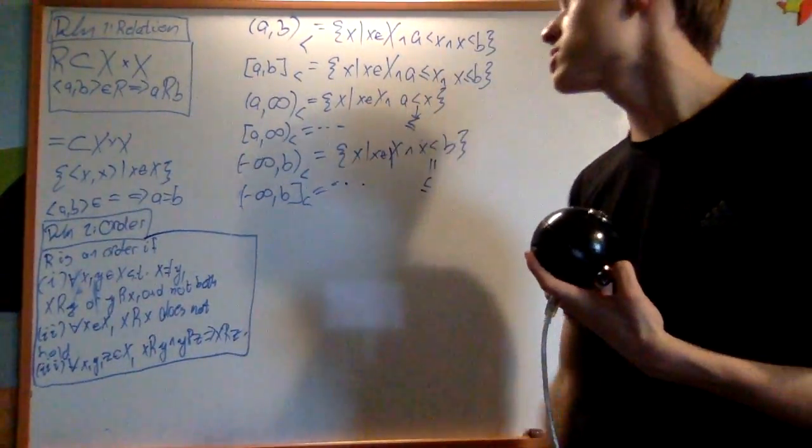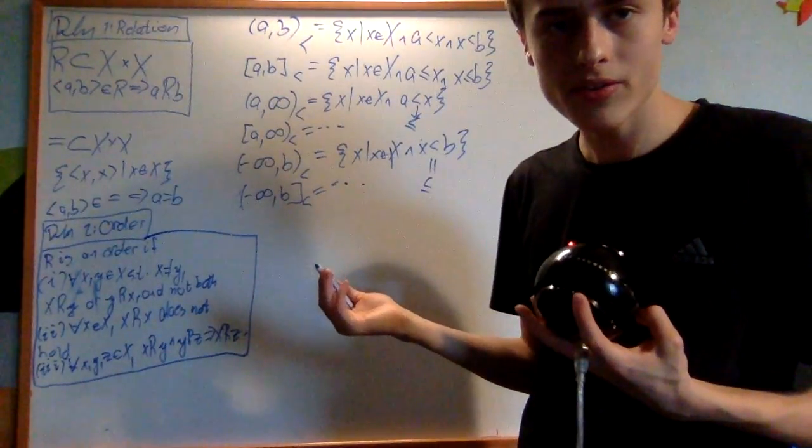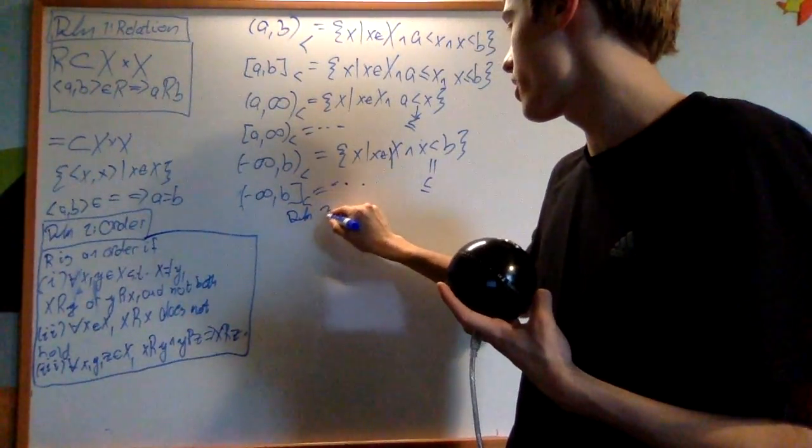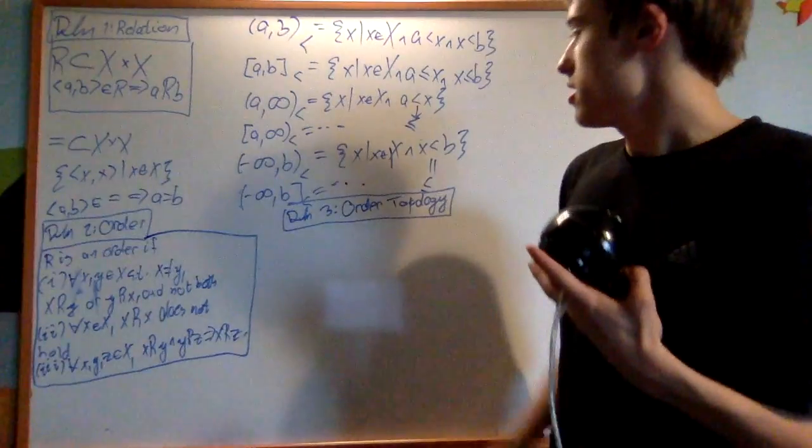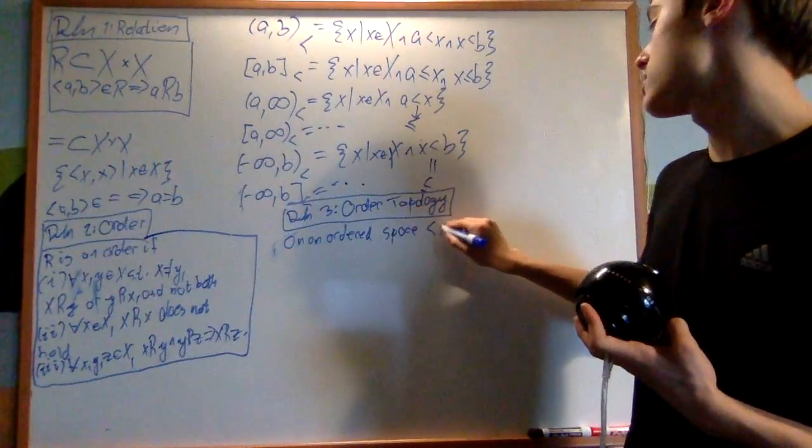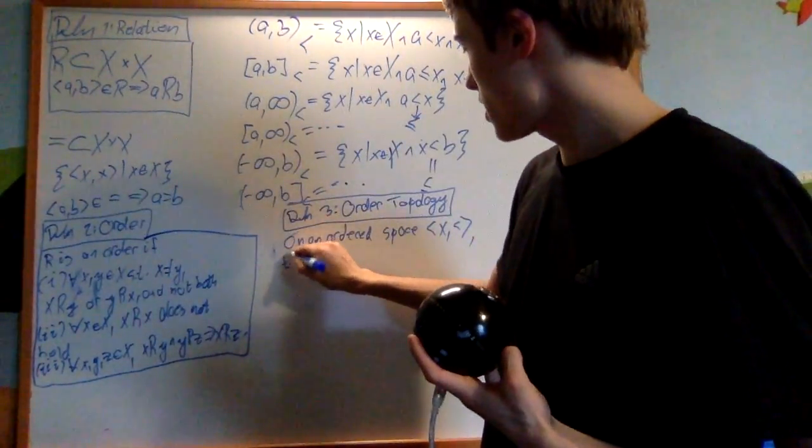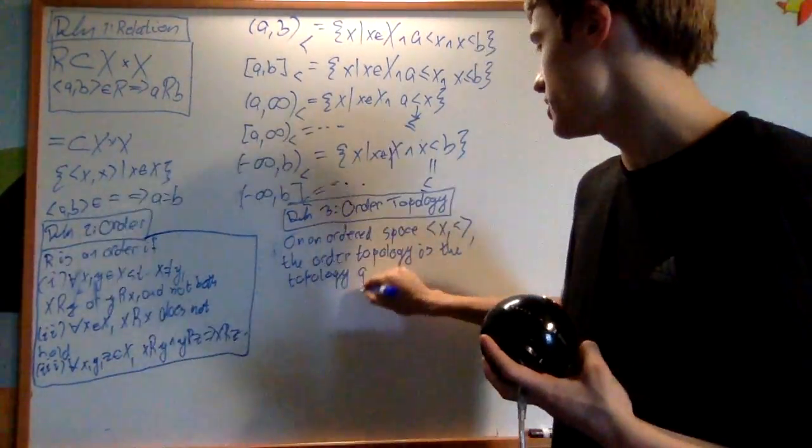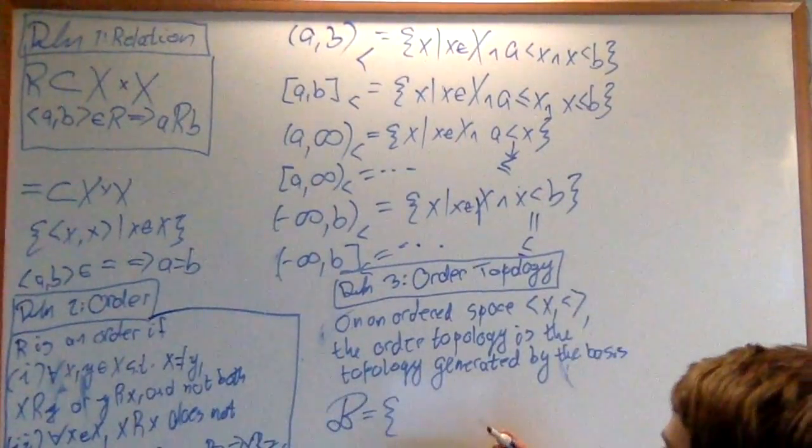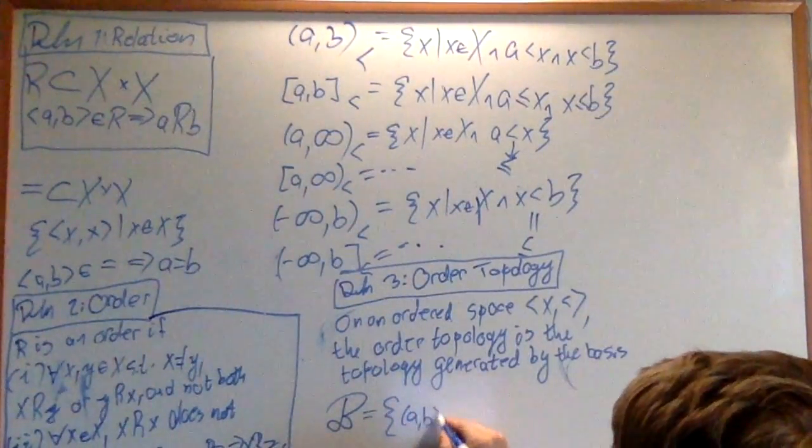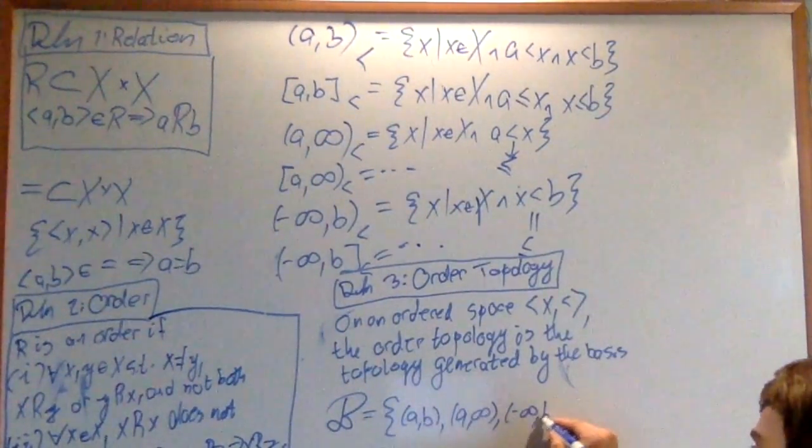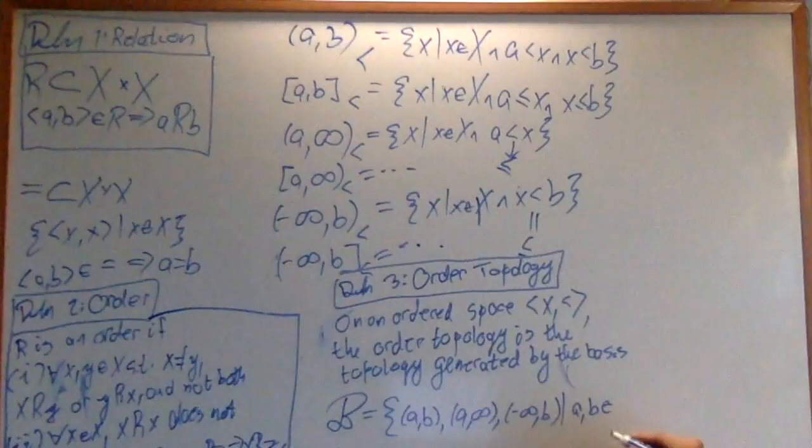So you might be wondering, what's the order topology? Well, it's very similar to how we define the topology on the real numbers. So the definition here, definition three is of the order topology. And the order topology on an ordered space x given an order less than, the order topology is the topology generated by the basis, which is going to be the set of all intervals (a,b), or (a,infinity), or (-infinity,b). And this is for a, b an element of x.